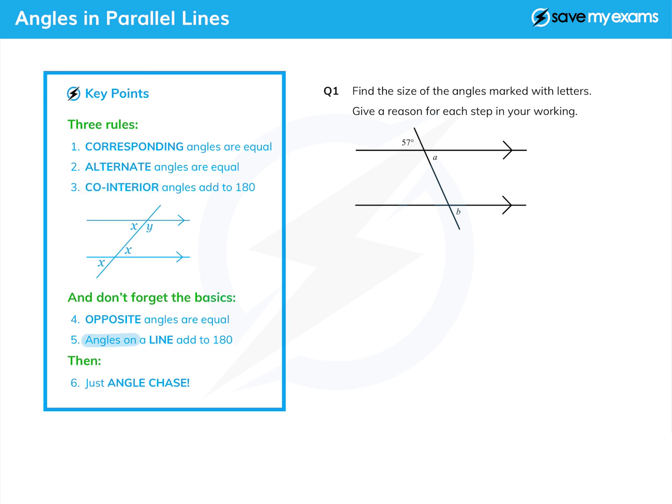And don't forget the basics—the one we've just talked about, angles on a line add up to 180, and also opposite angles are equal. And that's angles opposite each other on a crossing of two lines. So those two are equal, and if we wanted to, these two would be equal as well.